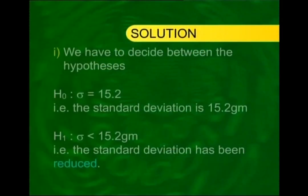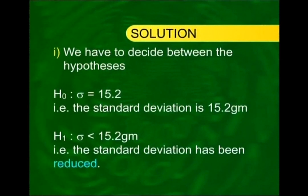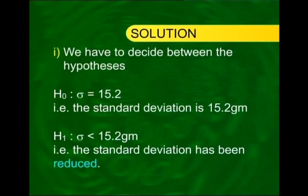Step 1 is the null and alternative hypothesis. H0: sigma is equal to 15.2 grams — that is, the standard deviation is still the same as before. And H1: sigma is less than 15.2 grams — in other words, the standard deviation has reduced.